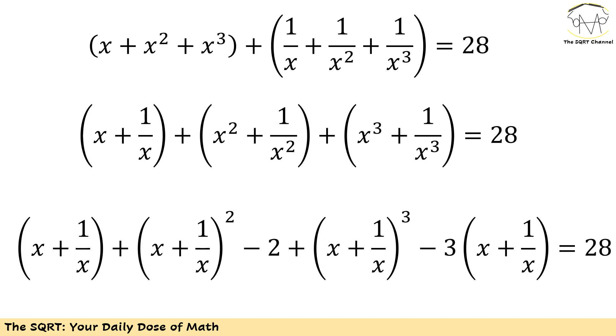At the end I will have power of 2 of x plus 1 over x minus 2. For the third term I'm going to use the same approach but this time it's going to be power of 3 of x plus 1 over x minus 3 times x plus 1 over x.